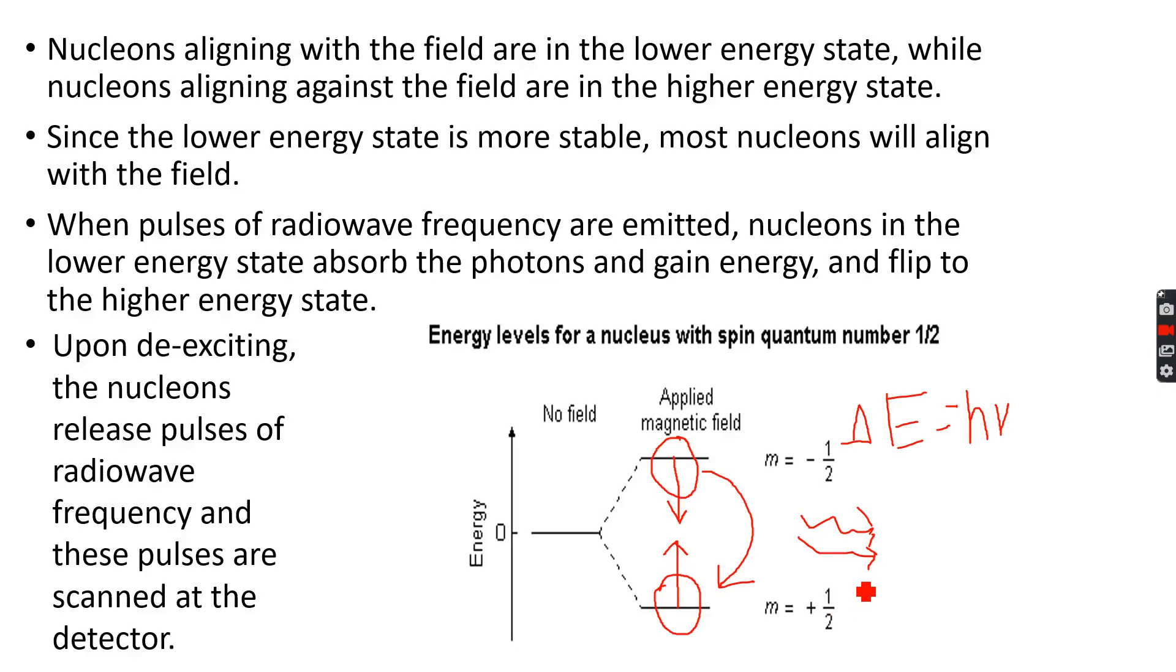Pulses are detected by the detector and tell us the frequency initially absorbed by the nucleon. Since total energy is always conserved, the energy absorbed by the nucleon to flip from the lower energy state to the higher energy state will be the same as the energy released.